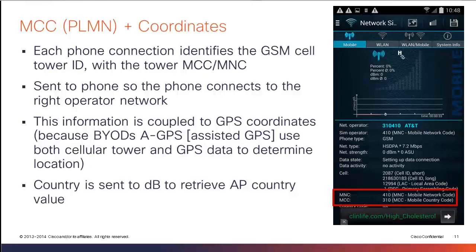Each cell tower sends what we call the MCC and MNC information — the Mobile Network Code and the country code — as you can see in the screenshot. We need this information so that we know in which country you are and so that we can provision that country code to the access point. It does not mean you have to have a data connection, but it does mean you have to be in range of a cell tower to receive the country code and mobile network code. You also need to connect to CCO to be authenticated and run the application, but this can be done over the wireless network — it doesn't need to be done over a cellular network.